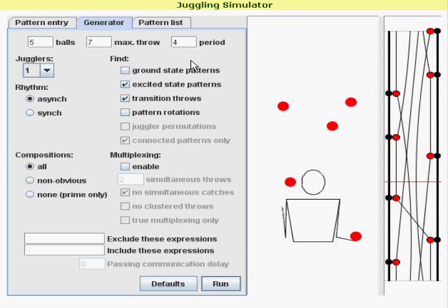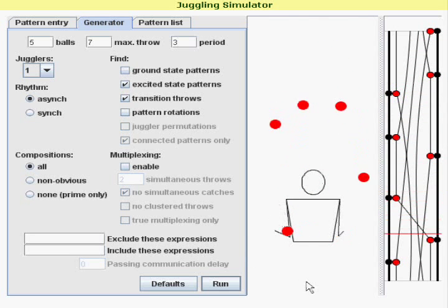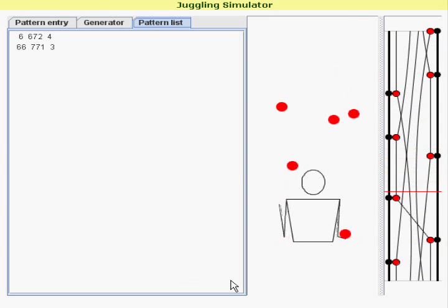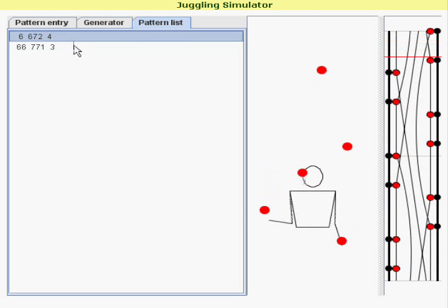Now, you can probably notice that we have an even period here. It's period 4, so we're not changing sides, which is boring. So we're going to throw in a period 3 siteswap right inside of this thing, just like when you're doing ground state siteswaps. You can take one siteswap and attach it right to the end of another siteswap, and you've got another valid siteswap.